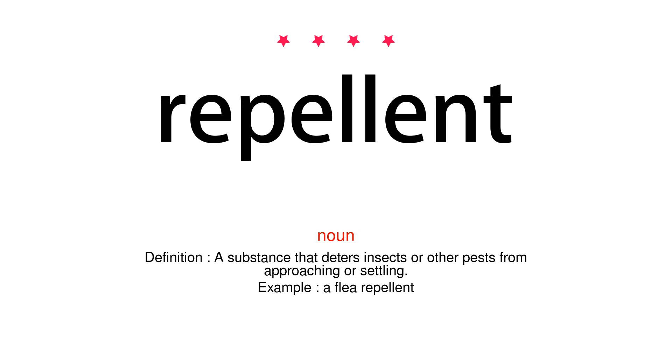Noun. Definition: a substance that deters insects or other pests from approaching or settling. Example: a flea-repellent.